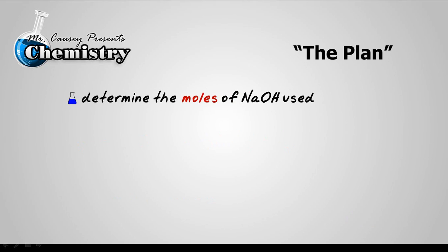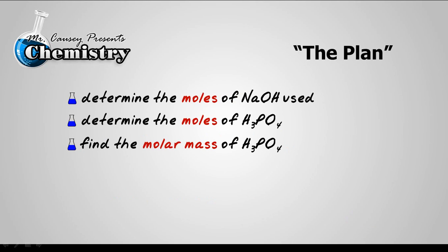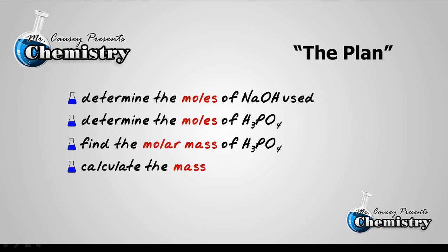So let's lay out a plan. And that plan is going to be first to determine the moles of sodium hydroxide used. And then determine the moles of phosphoric acid. We'll then find the molar mass of the phosphoric acid. And with that we'll calculate the mass of phosphoric acid. It won't be too difficult.